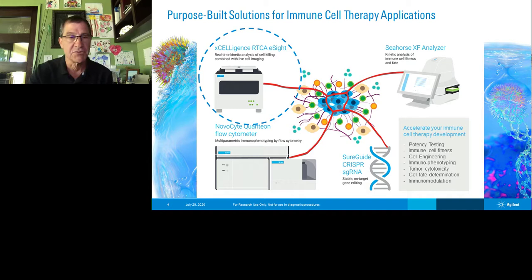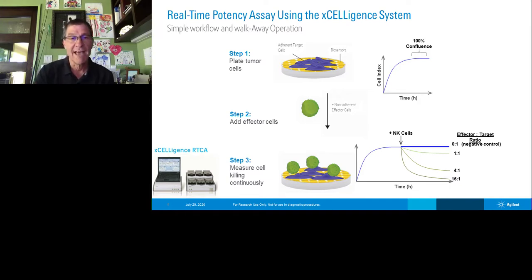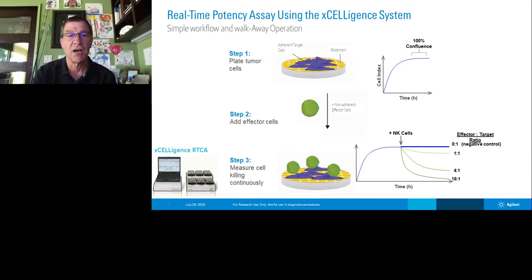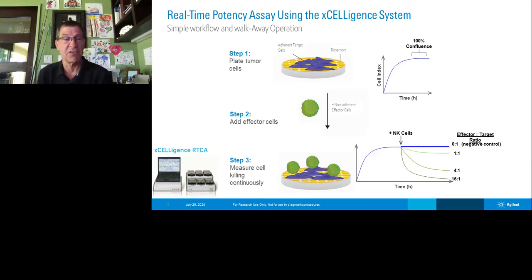Let's start with the xCELLigence real-time cell analysis platform, which is based on an impedance measurement technology. It's a very straightforward and quite simple workflow that is incredibly sensitive. An electrical field is caused by electrodes that run across the bottom of the plates, and whatever cells bind and sit on the plate impede that field. We can get tremendous amounts of information regarding their size and morphology, motility, proliferation, cytotoxicity, and activation. We believe this technology is one of the best and most specific and sensitive ways to do a cytotoxicity assay.